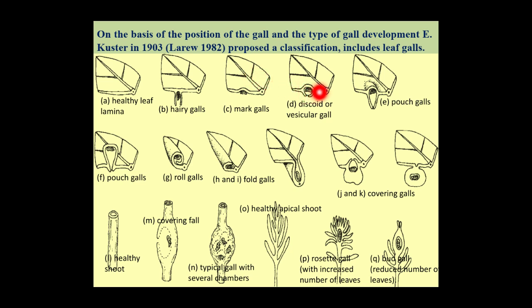The third type of gall is discoid or vesicular gall. This type of gall is also known by other names such as pit galls. These galls are characterized by slight depression, and in this depression the insects feed on plant tissue. Sometimes the epidermis forms a vesicular gall, which is why it is called vesicular gall.